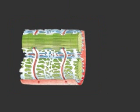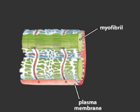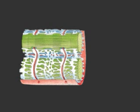Muscle cells have an elaborate architecture that allows them to distribute calcium ions quickly throughout the cytosol. Deep tubular invaginations of the plasma membrane, called T-tubules, crisscross the cell.